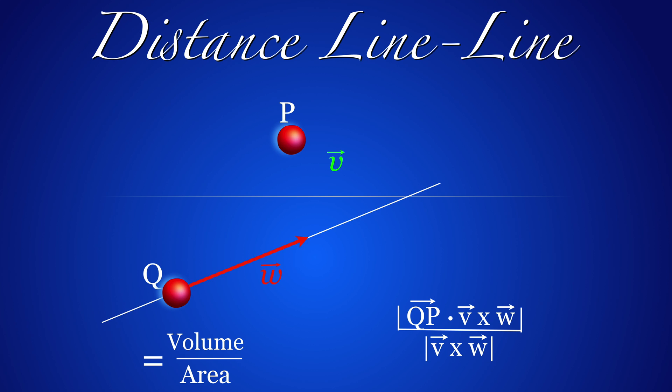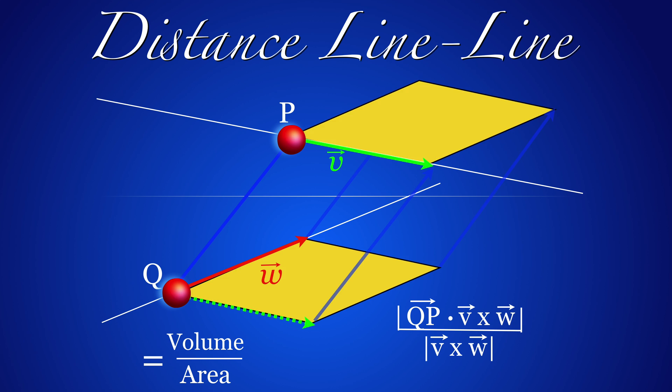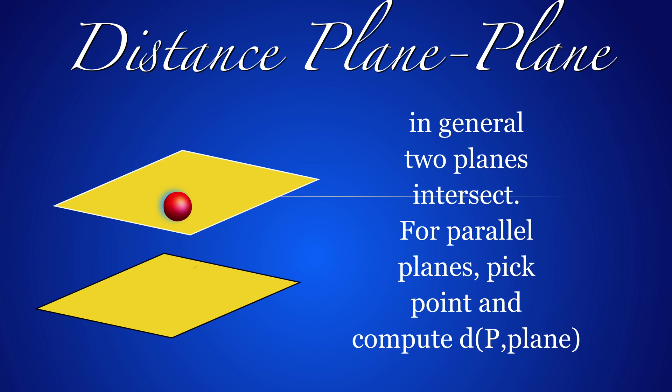Or we can again see this as the height of a parallelepiped, which is the volume divided by its base area. This works if the lines are not parallel.